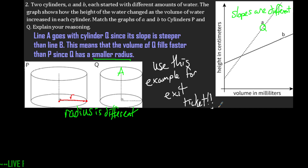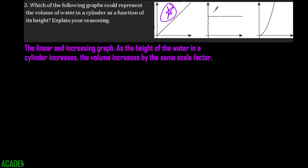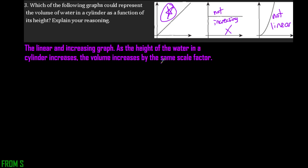Be sure to pause, rewind, and replay as always so you can ask questions. For number three, it says which of the following graphs could represent the volume of water in a cylinder as a function of its height? We're going to pick the linear and increasing graph — the first one, because it's a straight line. The second is not increasing and the third is not linear because it has a curve. As the height increases, the volume also increases by the same scale factor — height on the x-axis, volume on the y-axis.